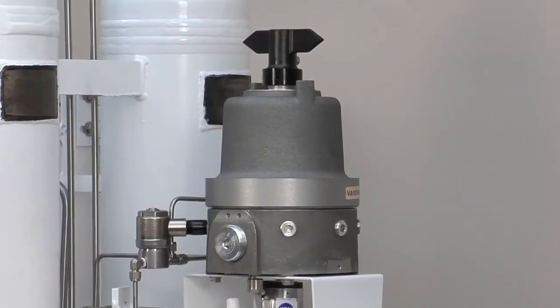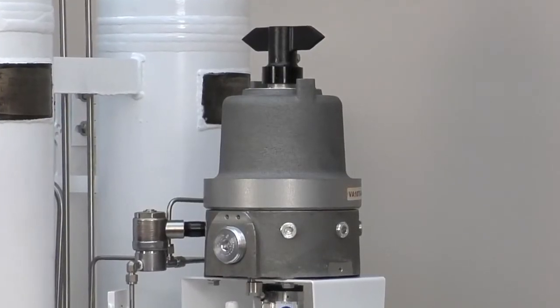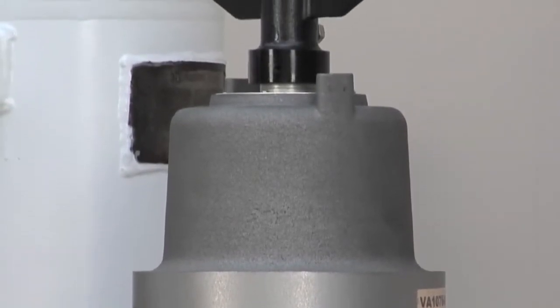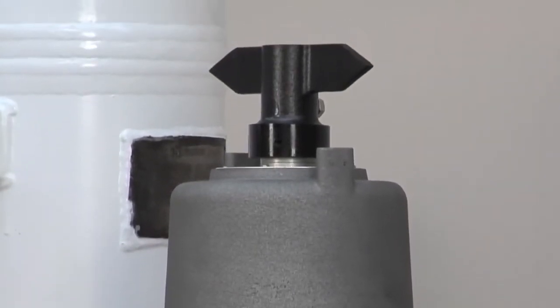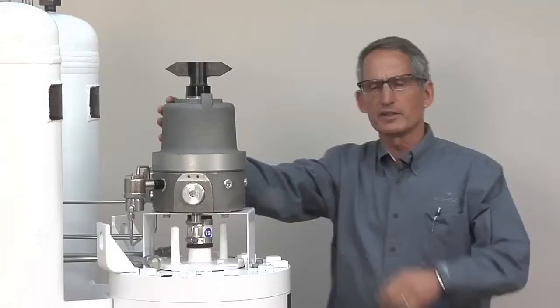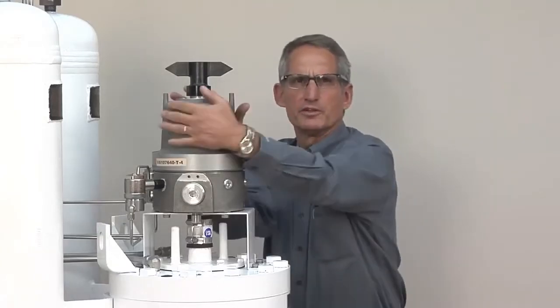Here's the limit switch assembly. It's a Schaefer limit switch and includes single pole double throw mechanical type switches. The position indicator is on top. Let's take a look at the limit switch assembly and the built-in terminals.